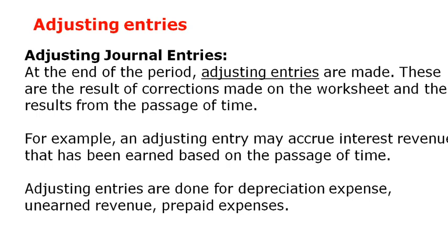For example, if you purchase a building, you record it at historical cost. But after one year, the building has been partially used, so its original worth decreases — part of it converts from an asset to an expense. To record this conversion, we make an adjusting entry. Another example: if you receive an advance payment from someone — called unearned revenue — it is not your earned income yet; it is a liability. As you provide services or products over time, the portion you have delivered becomes earned revenue, and the entry converting unearned revenue to earned revenue is called an adjusting entry.